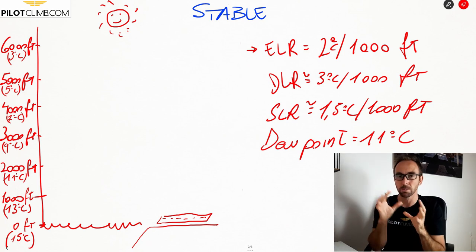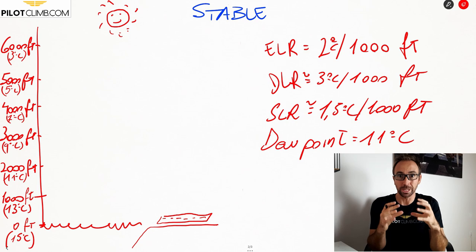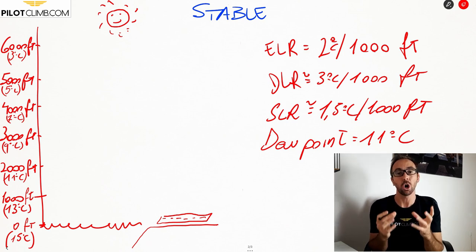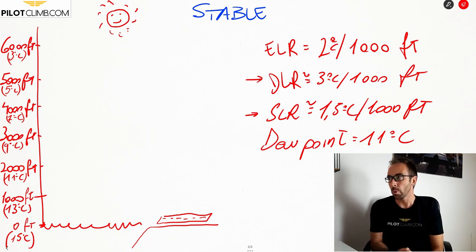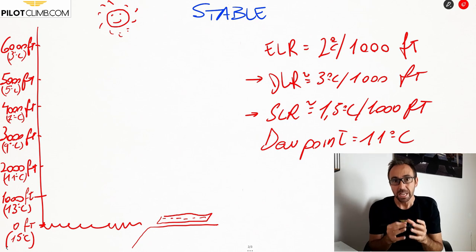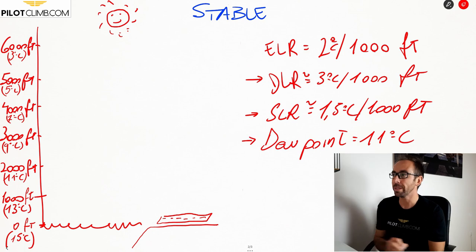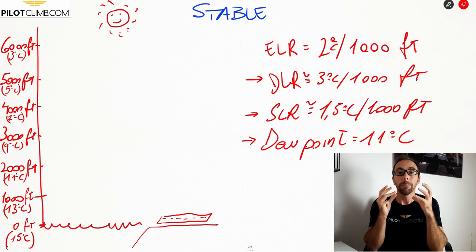This is crucial to understanding atmospheric stability. We have the dry lapse rate (DLR), which is how much temperature decreases with altitude for a dry, unsaturated air mass — one that has not yet become a cloud. Then we have the saturated lapse rate (SLR), which is the temperature change with altitude for a saturated air mass that is condensing and becoming a cloud. And lastly, the dew point is the temperature at which a dry air mass, if cooled to that temperature, will condense and become a cloud.